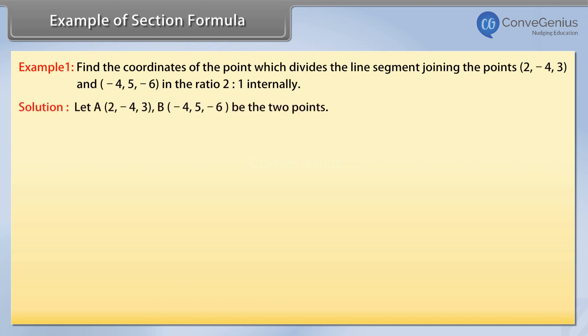Solution. Let A (2, -4, 3) and B (-4, 5, -6) be the two points.